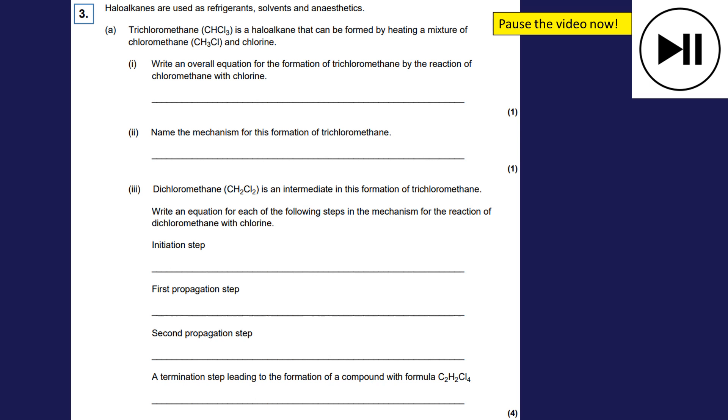Much longer question here then. So pause the video, have a go. And when you're ready to go through the answers, we can unpause. Overall equation to show the formation of trichloromethane. I'm going to find that easier to do the products first. So that's going to be trichloromethane from chloromethane. So what I'm doing here is I'm actually putting on two chlorine atoms. So I need two chlorine molecules and I'll release two HCls. So for every substitution, you need one Cl2. And I'm doing two substitutions. Name the mechanism. It's free radical substitution.